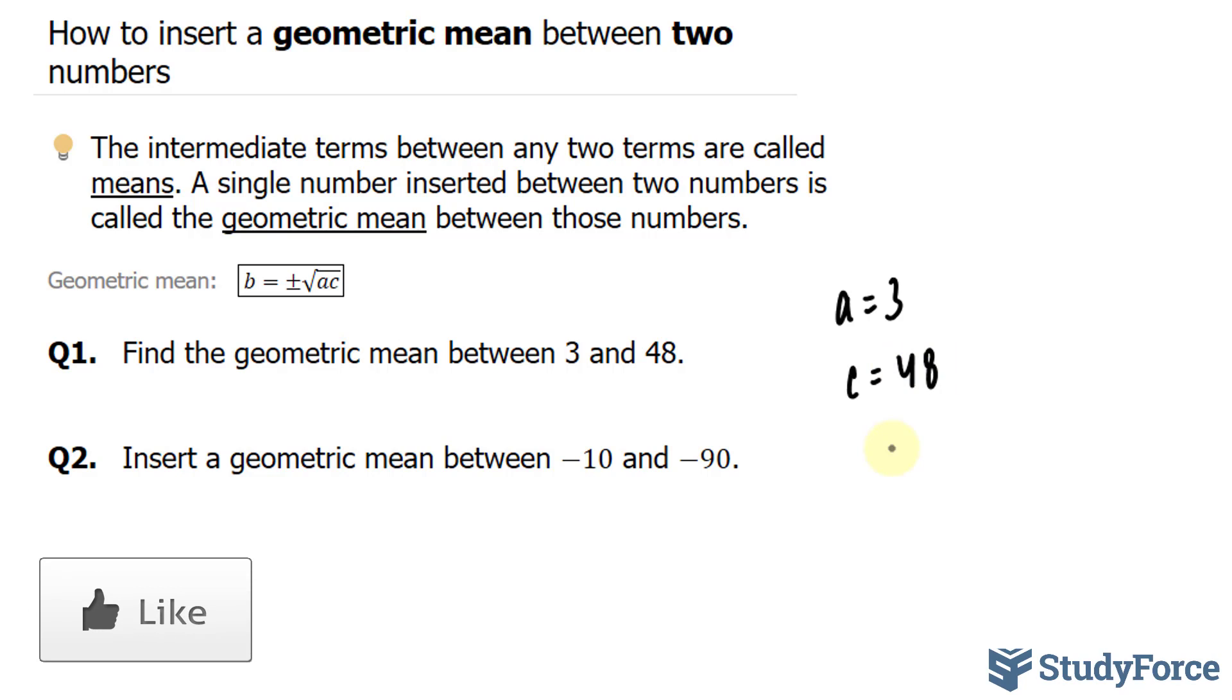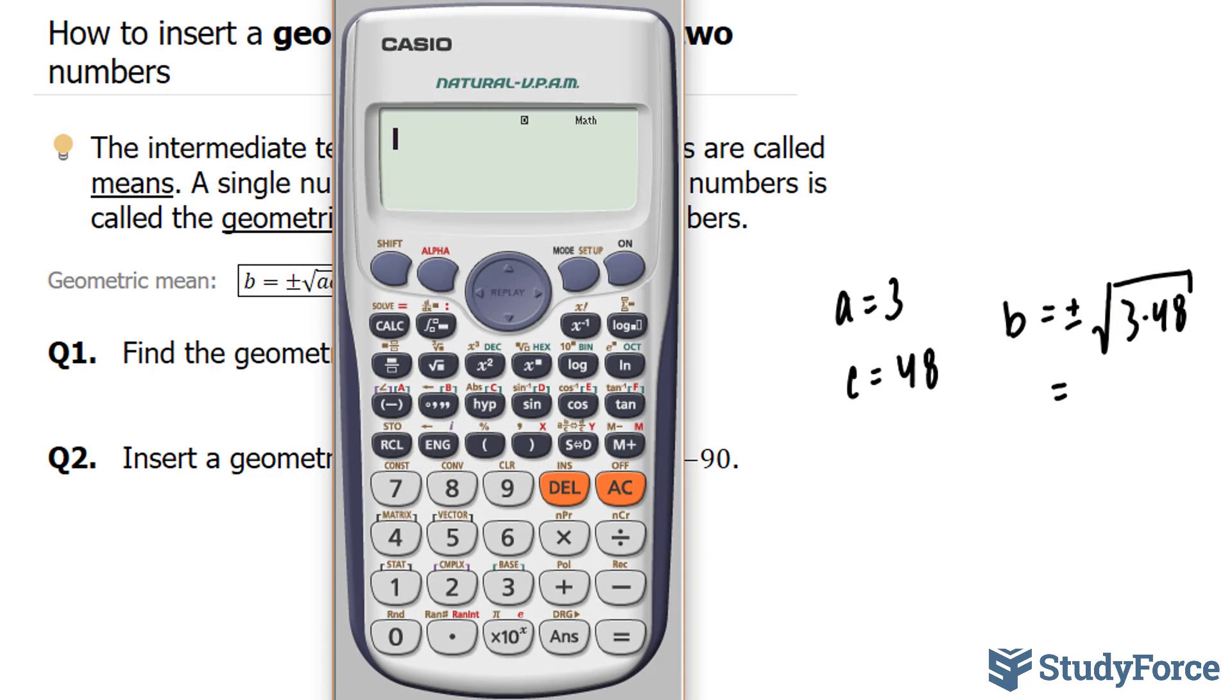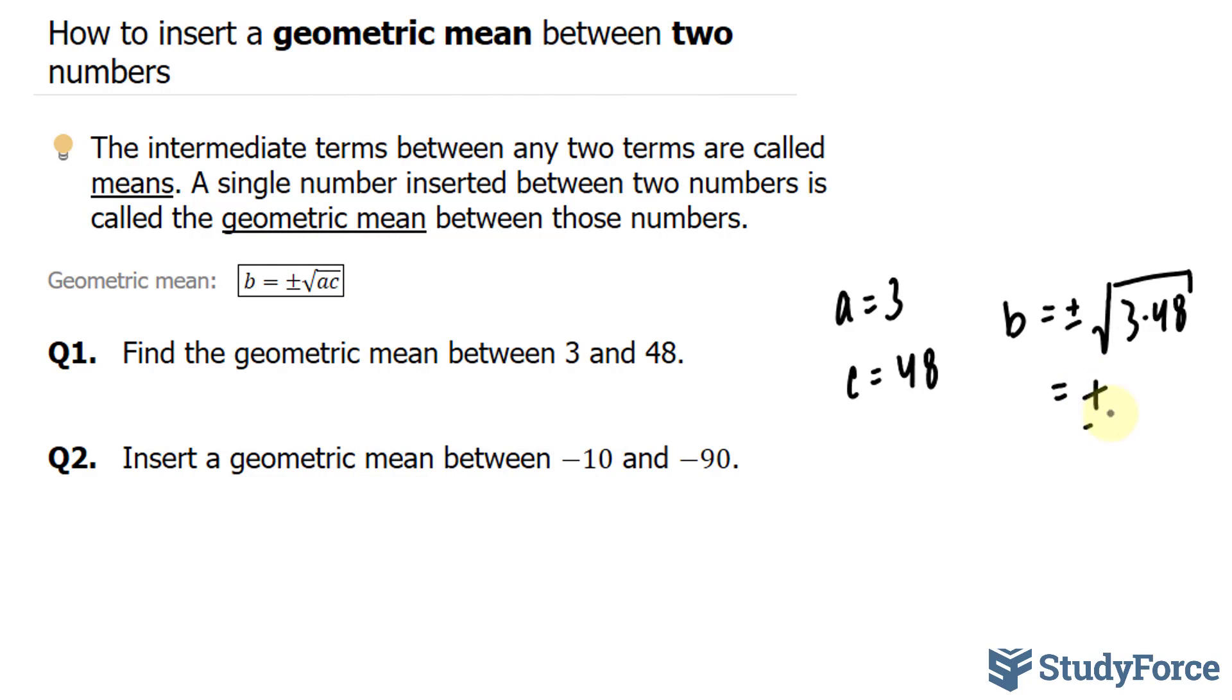All we have to do from this point is substitute these values into the formula, where B is equal to plus minus the square root of 3 times 48. Let's use our calculator to find out the answer. The square root of 3 times 48 gives us 12, or in other words, plus minus 12. Therefore, the answer for this is 3, plus minus 12, and 48.